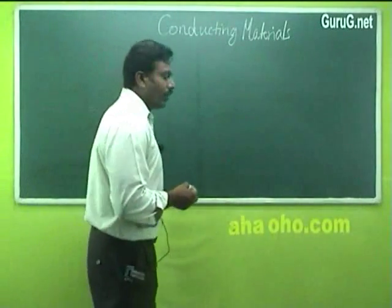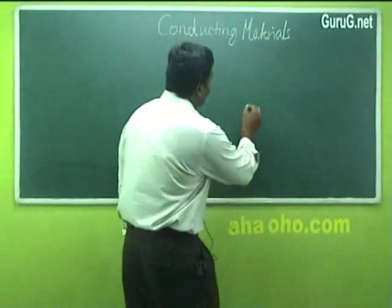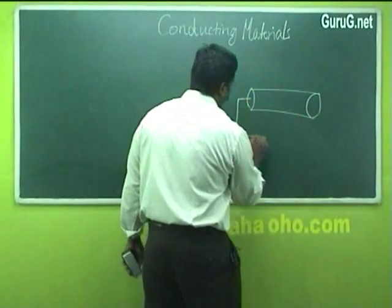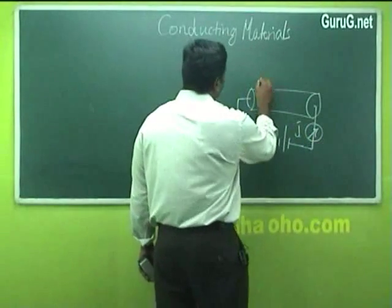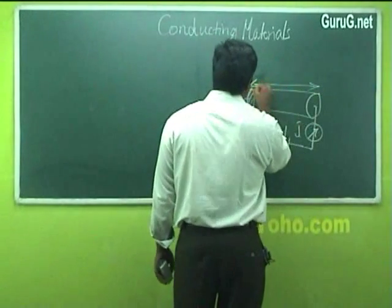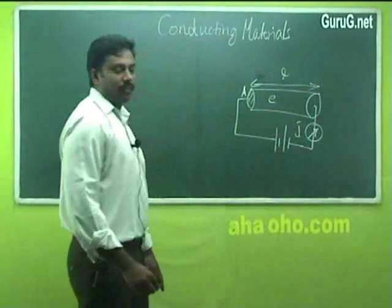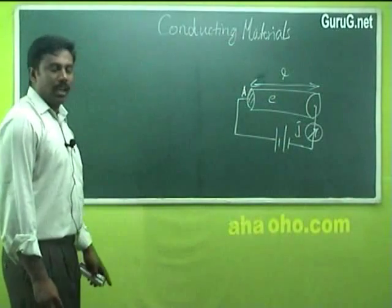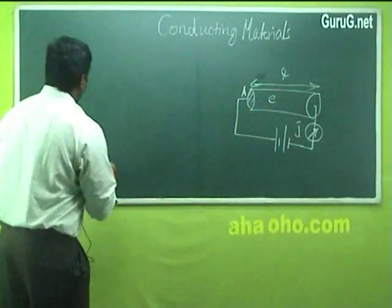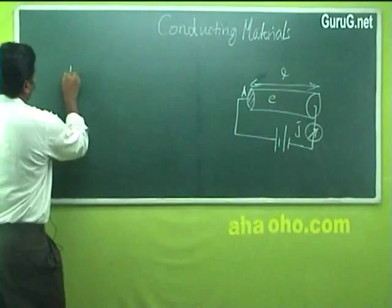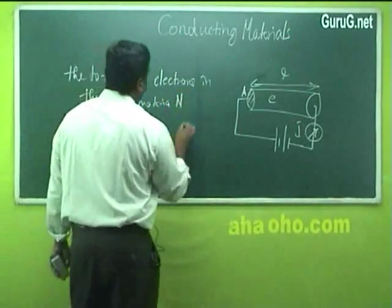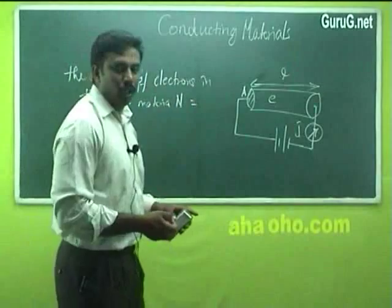To study the conductivity and mobility of electrons in a metal, let us consider a metal piece or metal rod to which a voltage is applied. Here, A is the cross-sectional area, L is the length, and e is the charge of the electron. The total number of electrons present inside the solid material is given by n.